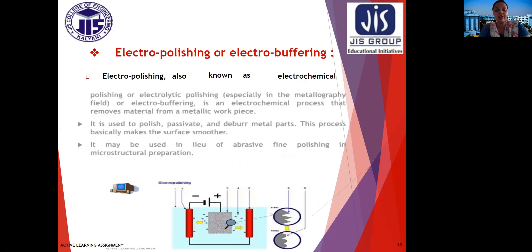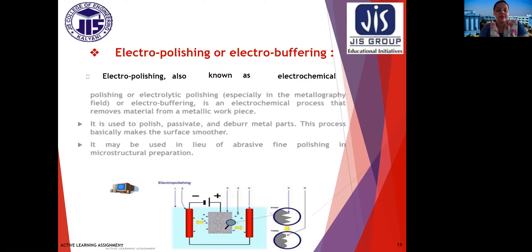Electro polishing or electro buffering, also known as electrochemical polishing or electrolytic polishing, especially in metallographic film, is an electrochemical process that removes material from a metallic workpiece. It is used to polish, passivate, and deburr metal parts, making the surface smoother. It may be used in lieu of abrasive fine polishing in microstructural preparation.